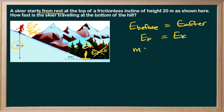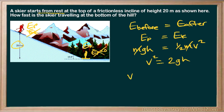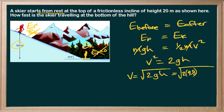For potential energy, MGH. And for kinetic energy, one half MV squared. The M's can cancel out, so the size of the skier doesn't matter. We can rearrange and solve for V — multiplying both sides by 2 and then taking the square root. Plugging in numbers: 9.8 and our H was 20. We can work that out to be 20 meters per second.